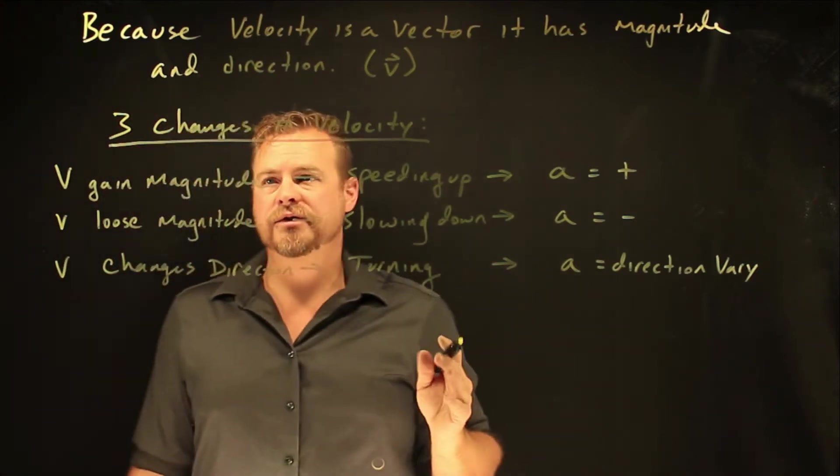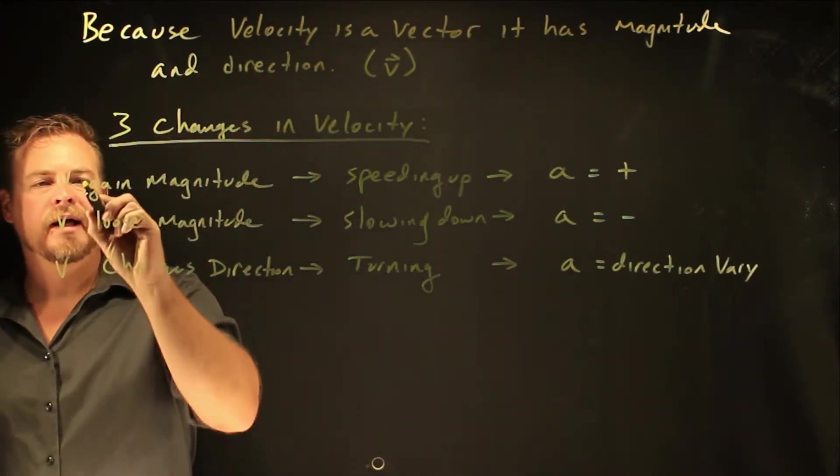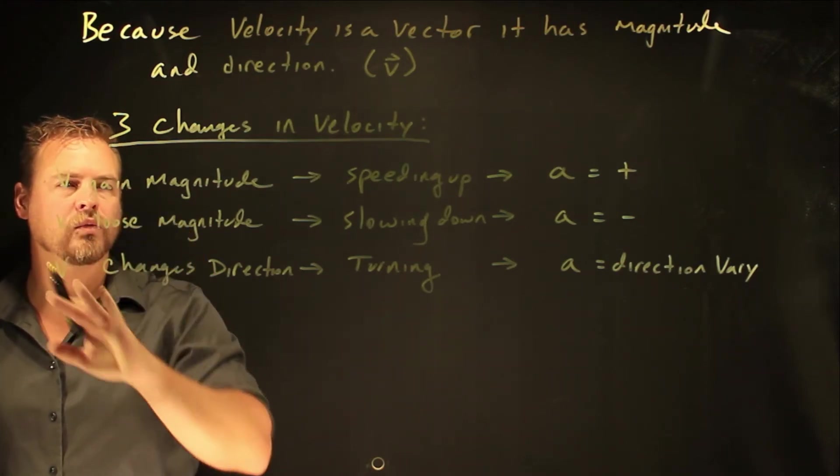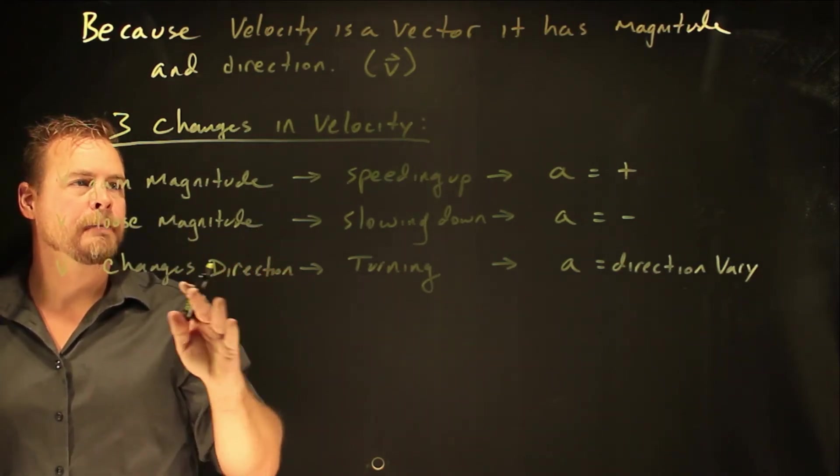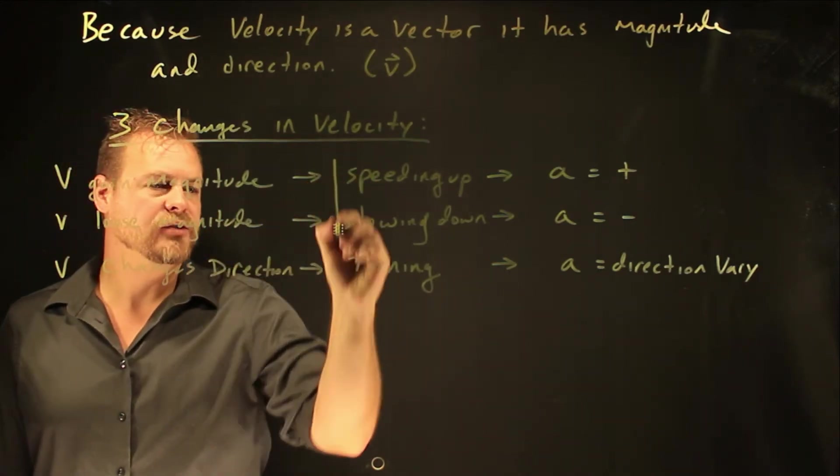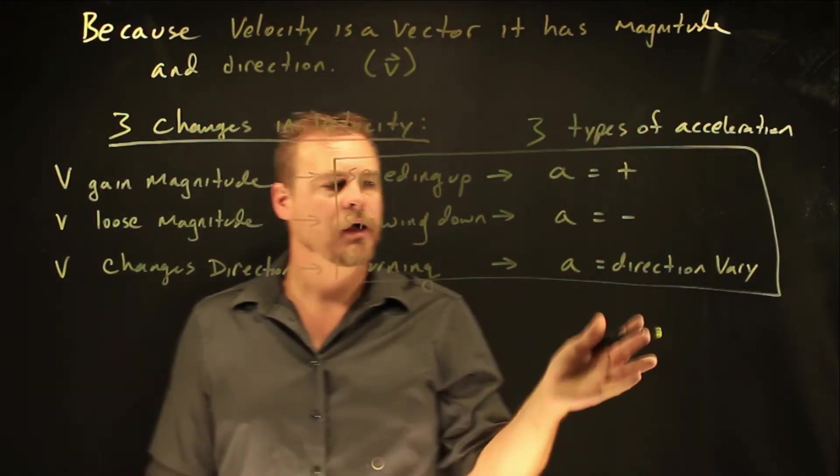So what this does is we talk about how the velocity would change. It would gain magnitude, lose magnitude, or change direction. There's three different ways that the velocity can change. What we're really saying is that that's three different accelerations. There are three types of acceleration.